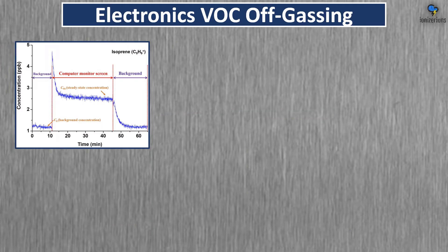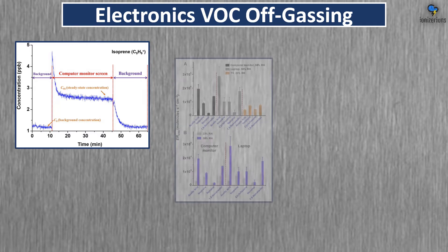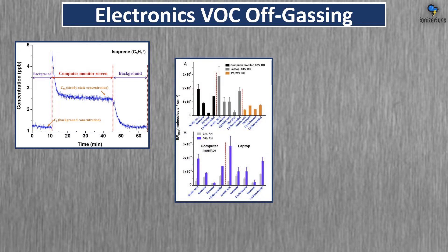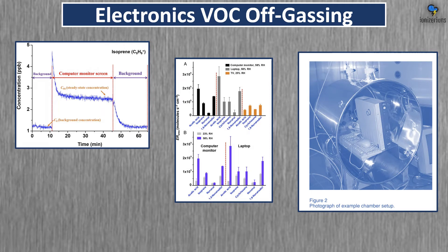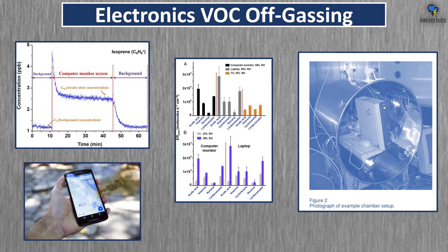Electronics VOC off-gassing. In the first image, when the computer monitor was turned on, it was emitting VOCs. The second image shows the list of VOCs that were emitted. The third image, from another study, shows an example of how they measure this. Electronics actually emit VOCs, including your cell phone. This is something to be self-aware of.